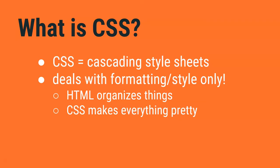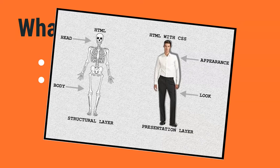CSS stands for Cascading Style Sheets. A style sheet is a list of the style rules on the page, like what a header should look like or what color to use on the page. CSS is used only to make things look nice. We use HTML for organizing everything on our page. Or to put it another way, HTML is for content and CSS is for formatting.